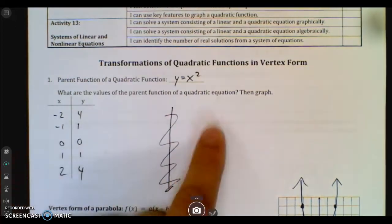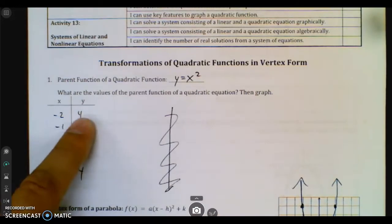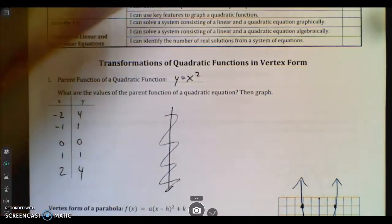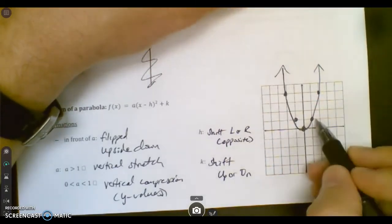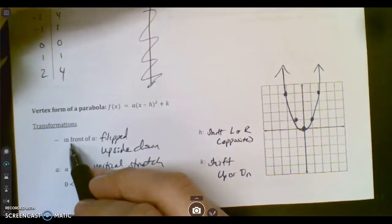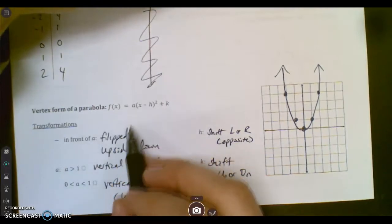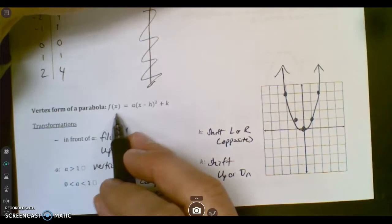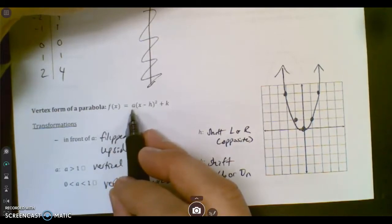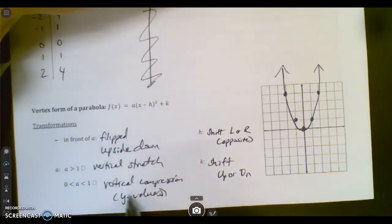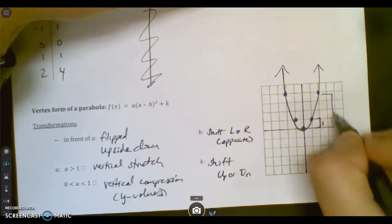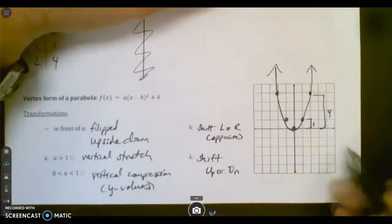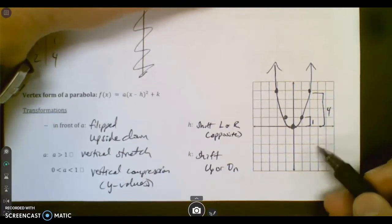This is a good recap of the parent graph. You're supposed to know these five points. You can always come up with them by just plugging it in and squaring it. Because negative two squared is four, zero squared is zero. Here's the five dots you should know. You give it a nice U shape.